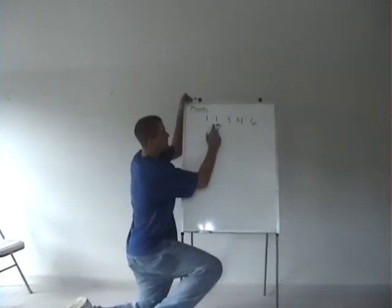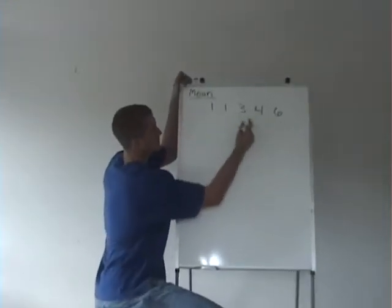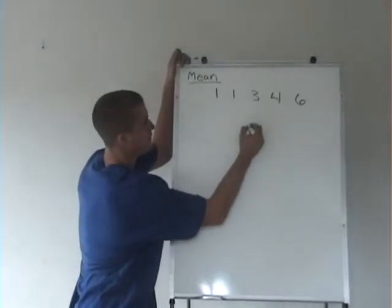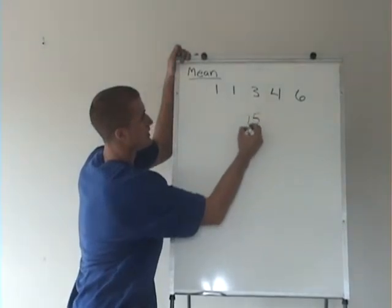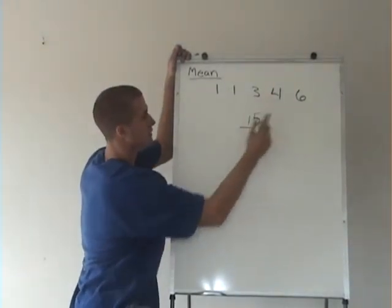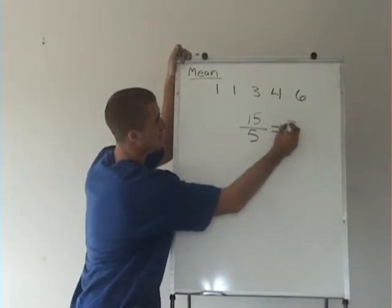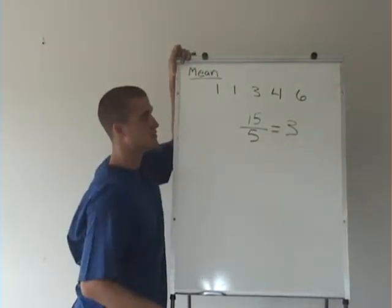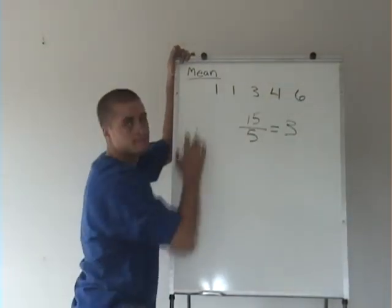So if we add 1 plus 1 plus 3 plus 4 plus 6, we get 15. And we count and see that there are 1, 2, 3, 4, 5 numbers. And 15 over 5 is 3, so the mean of these numbers is 3.